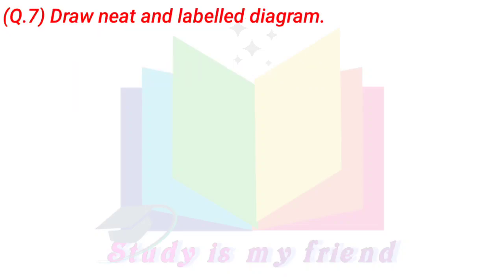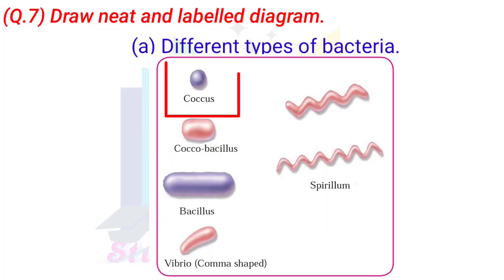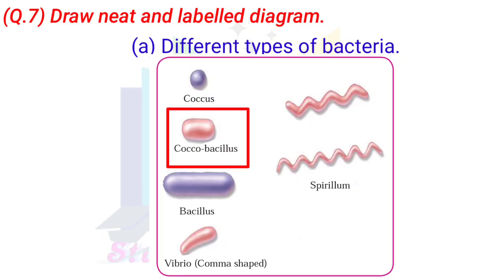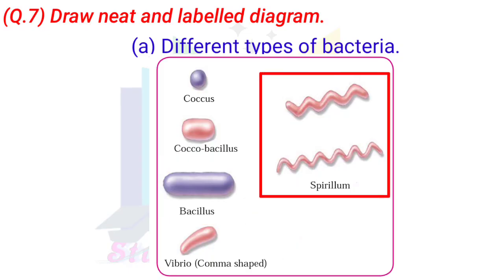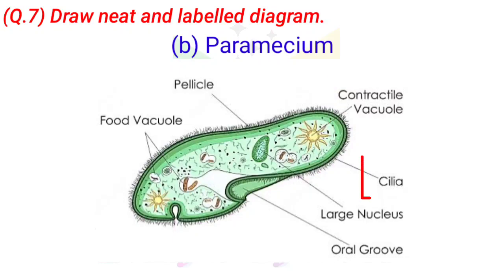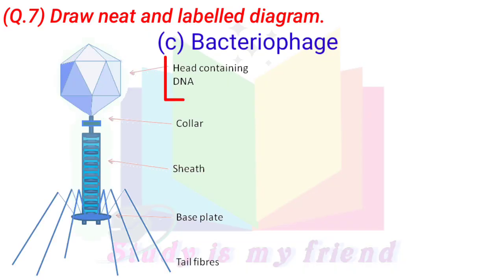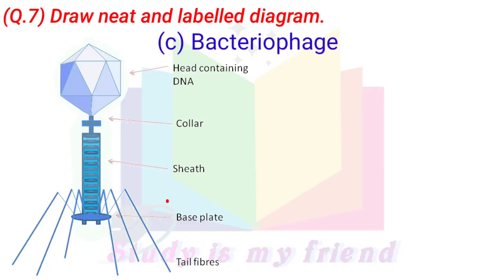Question 7: Draw neat and labelled diagrams. A. Different types of bacteria: Coccus, Coccobacillus, Bacillus, Vibrio, Spirillum. B. Paramecium — labelled parts: Pellicle, Food vacuole, Contractile vacuole, Cilia, Large nucleus, Oral groove. C. Bacteriophage — labelled parts: Head containing DNA, Collar, Sheath, Base plate, Tail fibers.